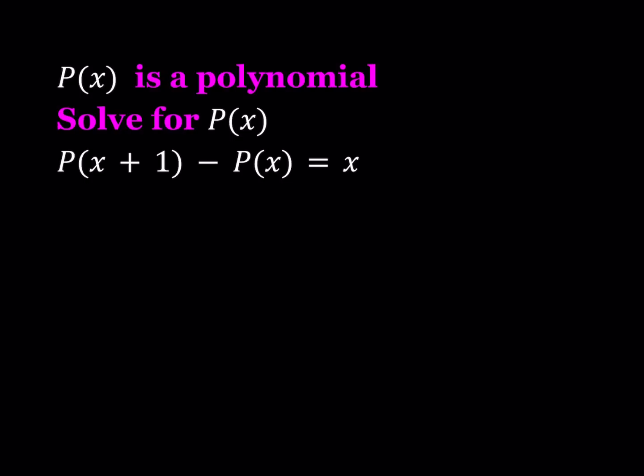Alright, so let's take a look at this expression. Since P of X is a polynomial, we have limited options here. It can't be 1 over X, it can't be a radical function, it's just going to be a polynomial. So that makes it easier to solve.